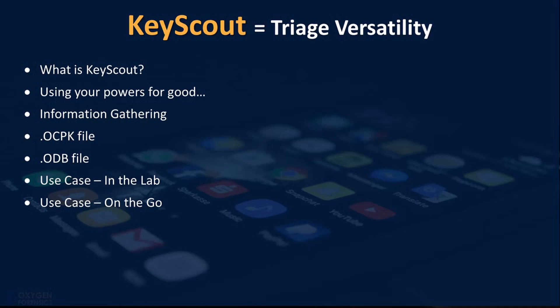Using your powers for good refers to the specific types of data that Key Scout can search for and the locations that you, the investigator, can specify. The caution here is to ensure that you are keeping within the left and right limits of your scope, policy, or any other guiding procedure or principle. Key Scout is an excellent tool for data collection in various computer ecosystems, and the possibilities for usage are limited only to the investigator deploying the tool itself.